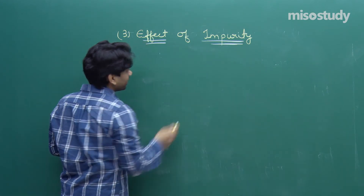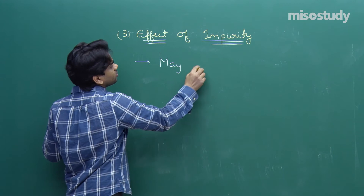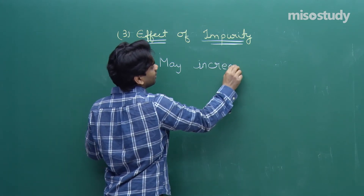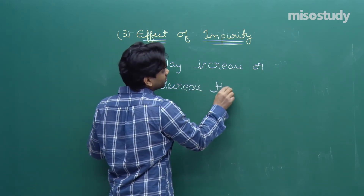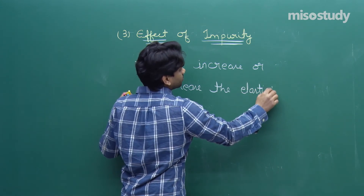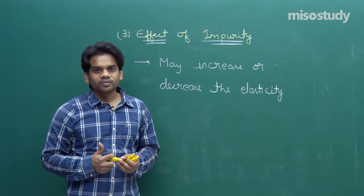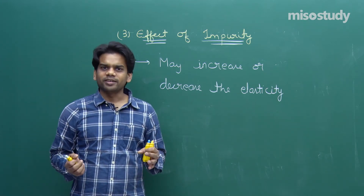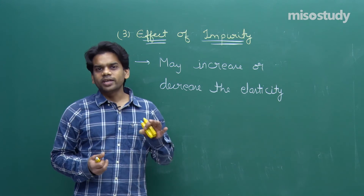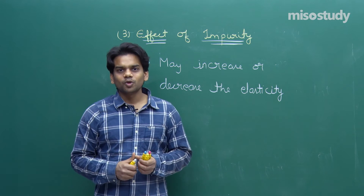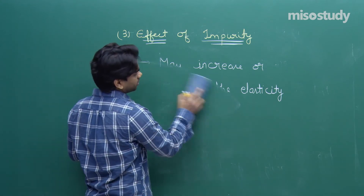Adding impurity may increase or decrease the elasticity of the material. We are not definite — whatever impurity is added may increase or decrease elasticity. Depending on the requirement, if you want to increase elasticity you add an impurity that does so; if you want to decrease it, you infuse a different impurity. The effect of impurity can work both ways.